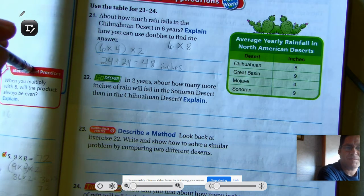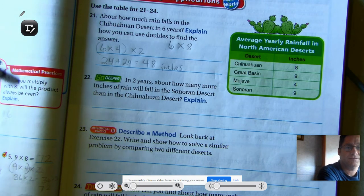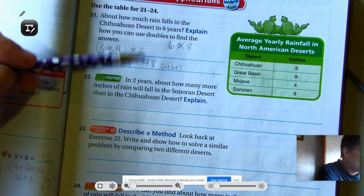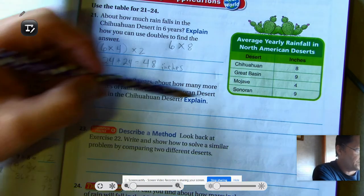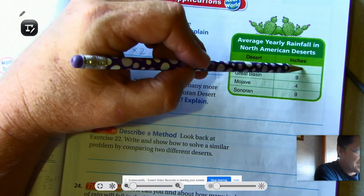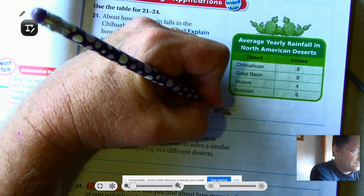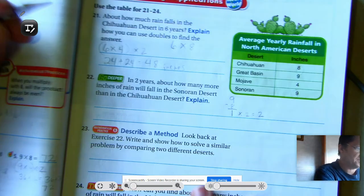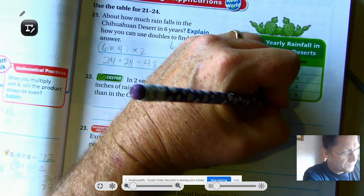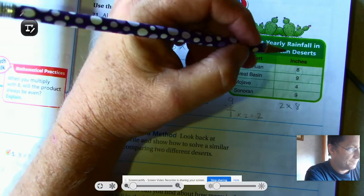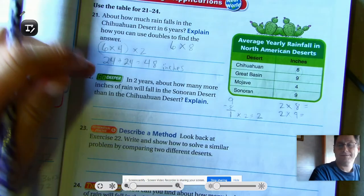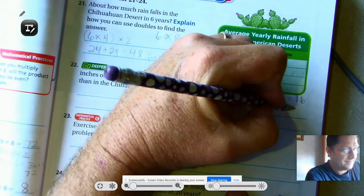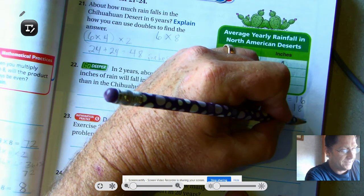In two years, about how many more inches of rain will fall in the Sonoran desert than in the Chihuahuan desert? So there's a couple of ways you could solve this. We could figure out the difference per year. So Sonoran is nine inches per year. Chihuahuan is eight. So we could just go nine, take away eight, is one. So there's a difference of one inch of rain per year. You can go one times two to get two inches. The other way we can do that is to have two problems. We could have two times eight and two times nine. So the two would represent the two years. Two times eight, 16. And two times nine is 18. And then we could subtract and we could get two.